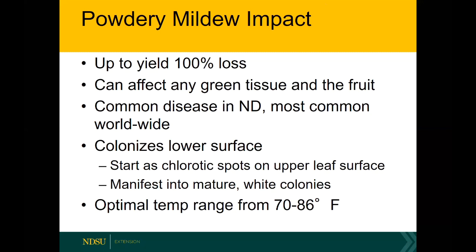Powdery mildew does result in yield loss because it will directly colonize berries. You don't want to eat a berry covered with powdery mildew, and it also causes a lot of mechanical damage by the way it feeds on the berries. It punctures the berries, covering them with holes to insert the fungal equivalent of feeding roots, called haustoria, into the berry. That's going to result in the berry shriveling up.